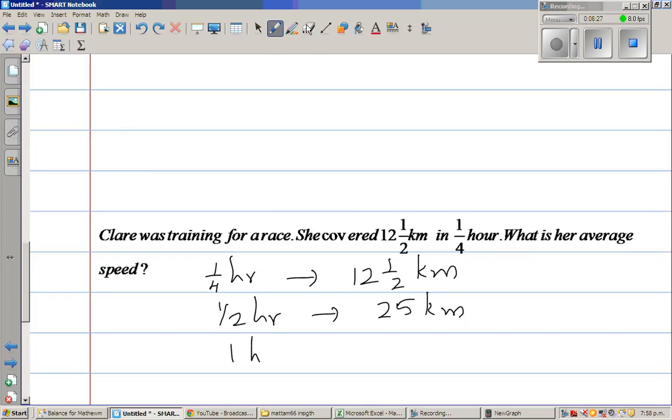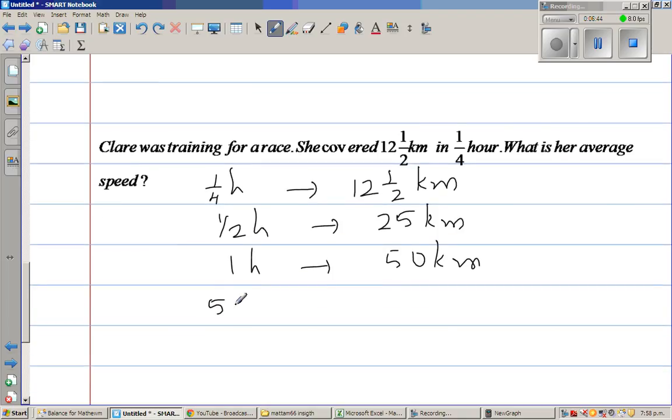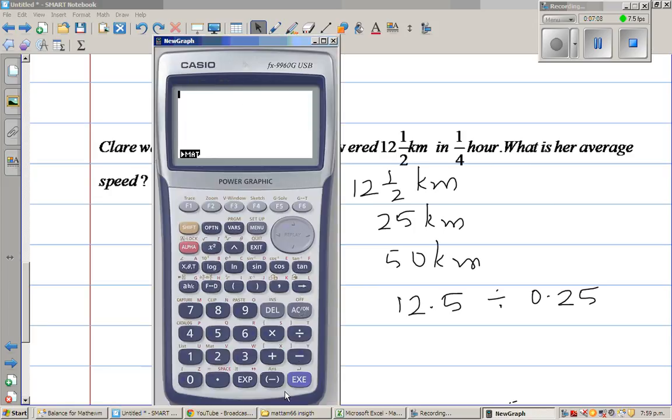So in one hour, I should write only H for, H stands for hour. So in one hour, she travels or she races how many kilometers? 50 kilometers. So her average speed is 50 kilometers per hour. Now, if you don't want to do like this, so this is same as 12.5 divided by 0.25. So let's use a calculator. You should know how to do both ways. So it's 12.5 divided by 0.25, which is 50.